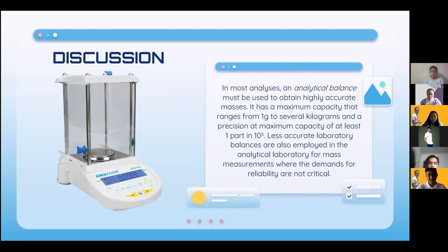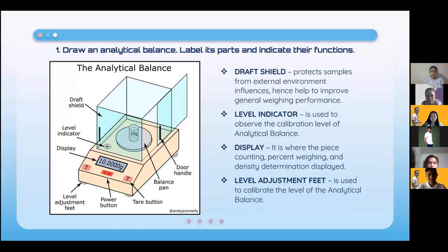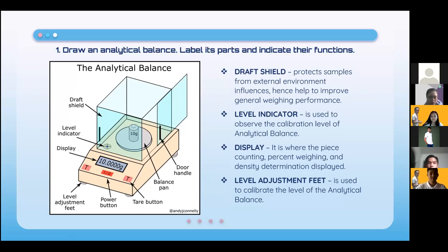In most analyses, an analytical balance must be used to obtain highly accurate masses. It has a maximum capacity ranging from one gram to several kilograms and a precision at maximum capacity of at least one part in 10 to the power of 5. Less accurate laboratory balances are also employed where demands for reliability are not critical.